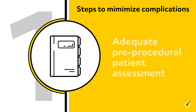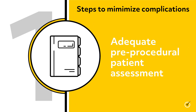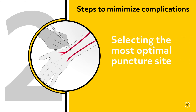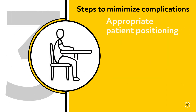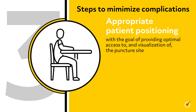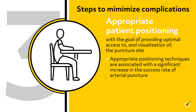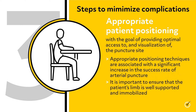Now let's go over the ways that complications can be minimized. Number one: adequate pre-procedural patient assessment. Number two: selecting the most optimal puncture site with the lowest risk for complications. Number three: appropriate patient positioning with the goal of providing optimal access to and visualization of the puncture site. Appropriate positioning techniques are associated with a significant increase in the success rate of arterial puncture. It is important to ensure that the patient's limb is well supported and immobilized.